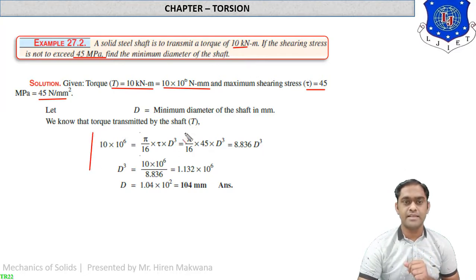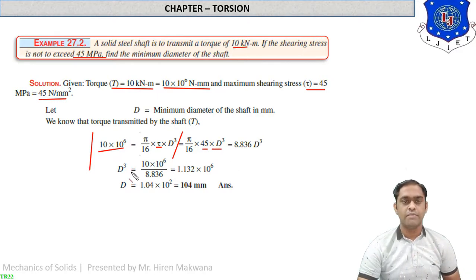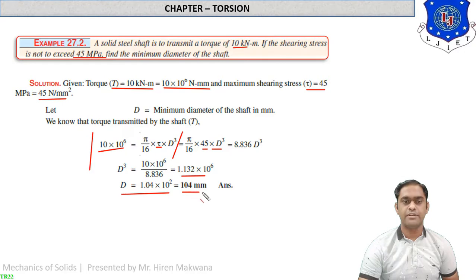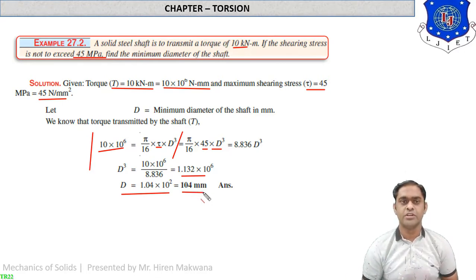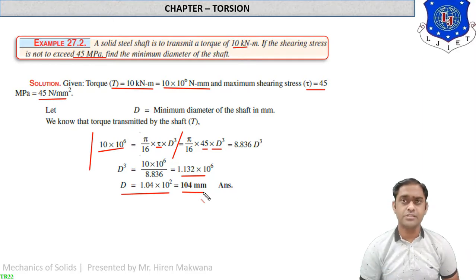Substituting T = 10 × 10⁶, τ = 45, and solving for D³, then D, you get D = 1.04 × 10² = 104 mm. So the required diameter of the shaft is 104 mm. In the first numerical torque was unknown; in the second numerical the torque is given and we find the diameter of the solid shaft.